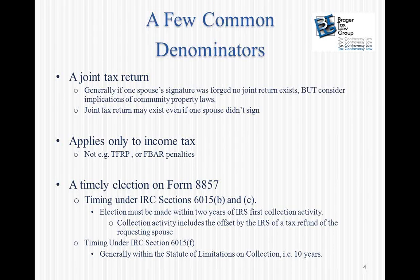If there is no joint return, there is no joint and several liability, no innocent spouse relief, and generally no need for innocent spouse relief. As I point out in the slide, if one spouse's signature was forged, then there is no joint return. However, in some cases courts have said that even though a signature was forged, the person acquiesced in the filing of the joint return, and therefore even without a signature one can have a joint return.